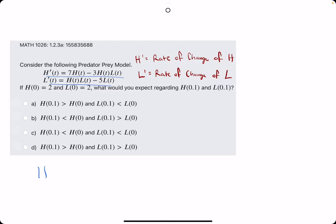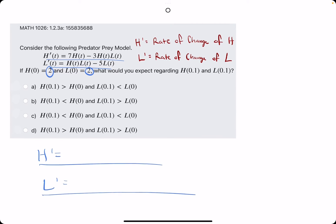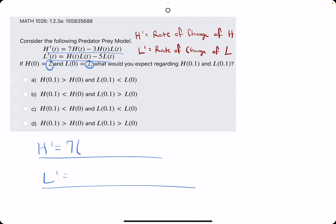We are calculating h prime and l prime using the h and l values provided. It looks like h and l are both 2 in this case. So we are plugging in 2 into 7 times h, or 7 times 2, minus 3 times h times l. 7 times 2 is 14 minus 3 times 2, which is 6, times 2, which is 12. So it looks like we get positive 2 for h prime.